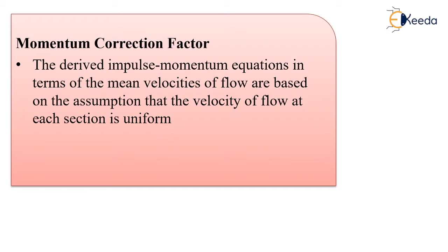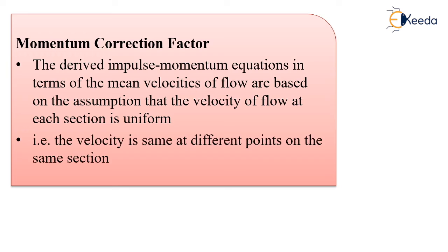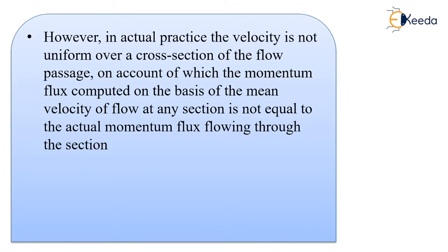The derived impulse momentum equations in terms of mean velocities of the flow are based on the assumption that the velocity of the flow at each section is uniform — that is, the velocity is the same at different points on the same section. However, in actual practice, the velocity is not uniform all over the cross-section of the flow passage.